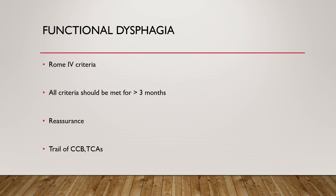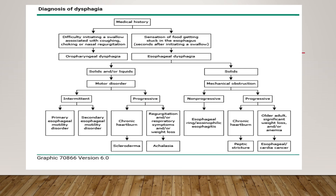There must also be an absence of esophageal motility disorders. All four Rome IV criteria must be met for at least three months. If this diagnosis is made, we reassure the patient that this is not a serious or organic cause, and we can give a trial of calcium channel blockers, which are smooth muscle relaxants, or tricyclic antidepressants.